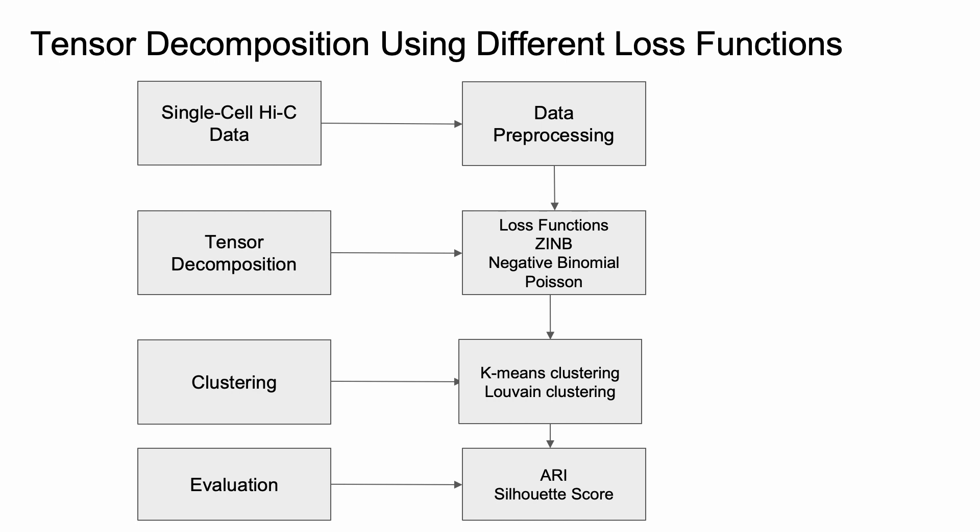Our tensor decomposition method basically looks like the following. We take the single cell Hi-C data, pre-process it accordingly, and then apply tensor decomposition with several different loss functions. As of now, we are attempting to use the zero-inflated negative binomial, negative binomial, and Poisson. In order to cluster, we are currently experimenting with k-means clustering and Louvain clustering, which is also done by other methods. Finally, for the evaluation phase, we are also using the ARI to validate our cell type labels.